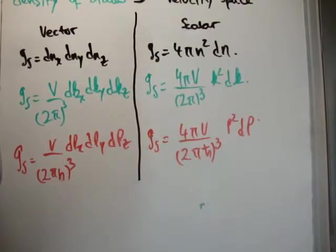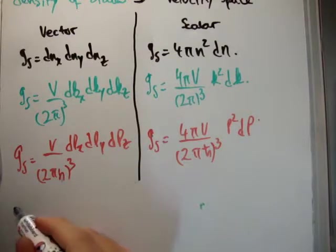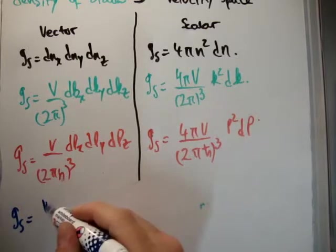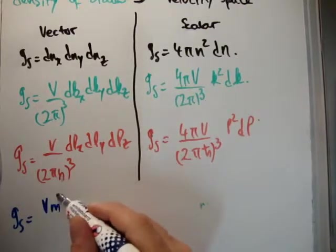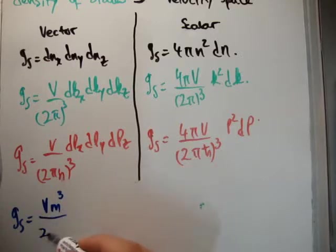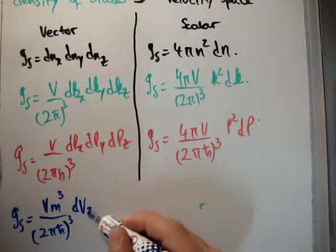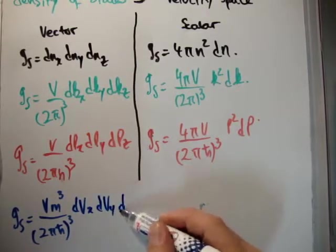So if we get those and we plug them in, we get the following expression. So in vectors, I'm going to do it in blue in fact. So g sub s is equal to vm cubed, twice pi h bar cubed, and we have dv sub x, dv sub y, dv sub z.